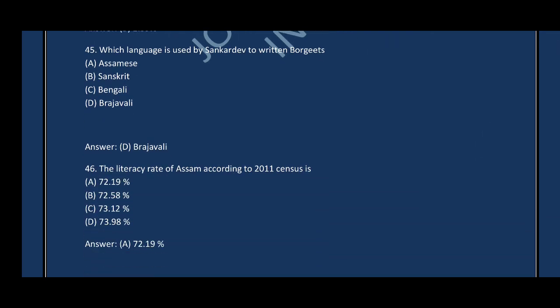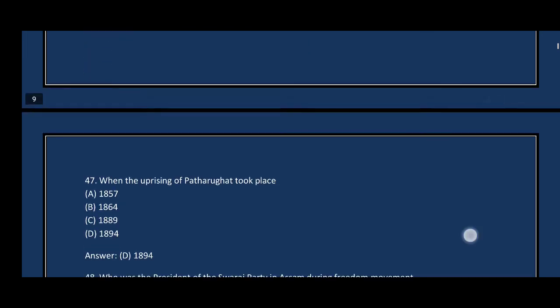Question number forty-six: The literacy rate of Assam according to the 2021 census — the correct answer is option A, 72.19%. Question number forty-seven: When did the uprising of Patharughat take place? The correct answer is option D — 1894. Patharughat is in Darrang District.